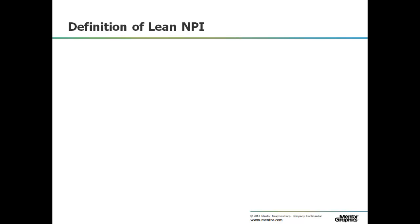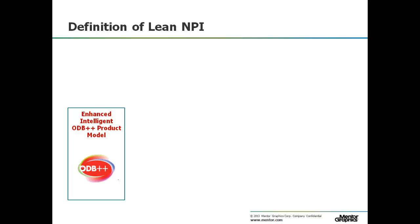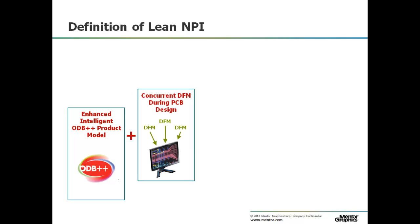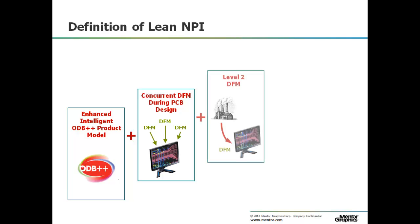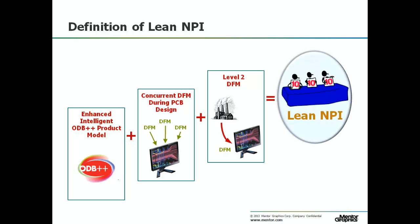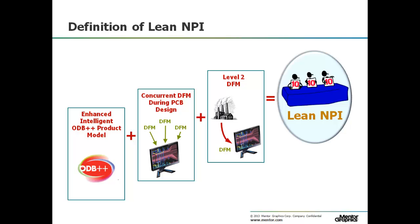Here is how we define the Lean NPI process model. First, use an intelligent manufacturing data source such as ODB++ to quickly import into CAM and DFM tools. At Optimum, we utilize the Valor NPI and MSS tools from Mentor Graphics. Secondly, run DFM checks at the various layout milestones — for example, placement approval, critical route, full copper connectivity, and a final approval. Finally, feed in specific vendor rule sets to run these DFM checks, and you have what we call Lean NPI.